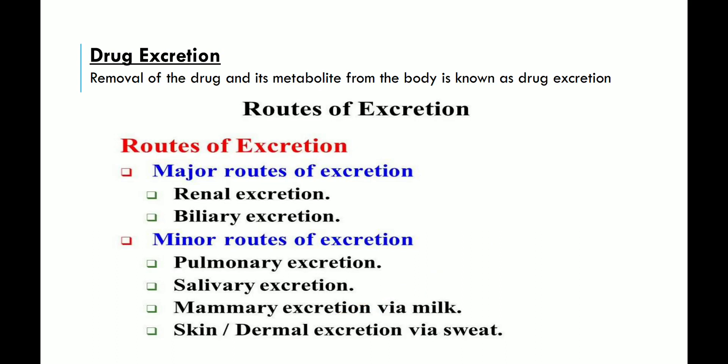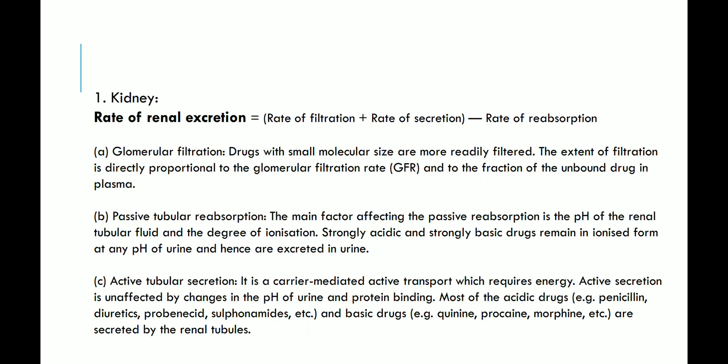There are different routes of excretion. The major routes are renal and biliary excretion. The minor routes are pulmonary, saliva, mammary excretion via milk, and dermal excretion via sweat. The main organ involved in excretion is the kidney. The rate of renal excretion equals rate of filtration plus rate of secretion minus rate of reabsorption.